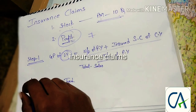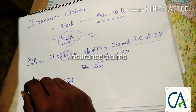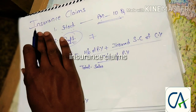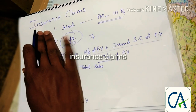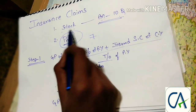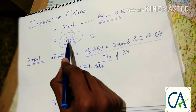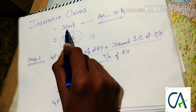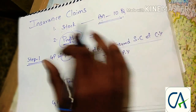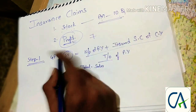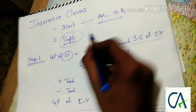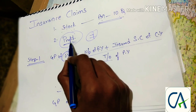Sorry guys, I was busy with my exam so I did not come here. Today my topic is insurance claims. There are two types of questions: loss of stock and loss of profit. For loss of stock I will make another video — there are 10 questions I will explain all these questions. Now we are going to the seven steps to calculate the loss of profit.